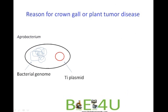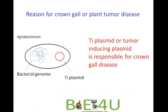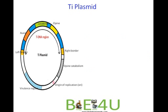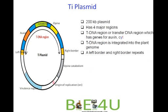Now let us look into the reason behind this disease. Agrobacterium, apart from its bacterial genome, has a plasmid called the tumor-inducing plasmid or Ti plasmid, which is responsible for causing crown gall disease. The Ti plasmid is a 200 kb large plasmid with four major regions. The first is the T-DNA region, or transfer DNA region, which has genes for auxin, cytokinin, and opine.